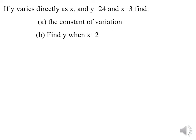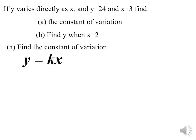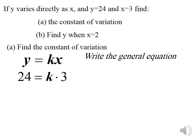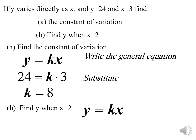If y varies directly as x, and y equals 24 when x equals 3, find the constant of variation, then find y when x equals 2. From y equals k times x, replace y with 24 and x with 3: 24 equals k times 3, so k equals 24 over 3 equals 8. The relation is y equals 8x. When x equals 2: y equals 8 times 2 equals 16.